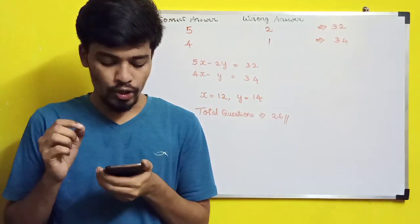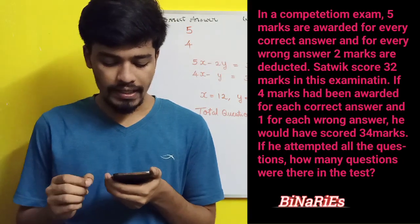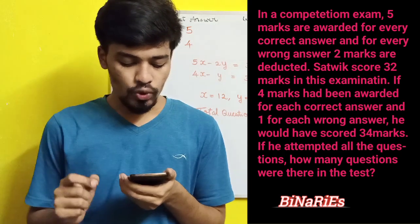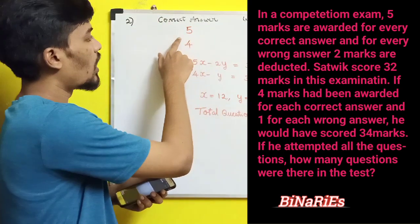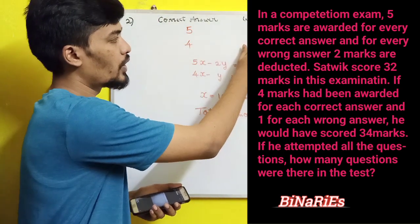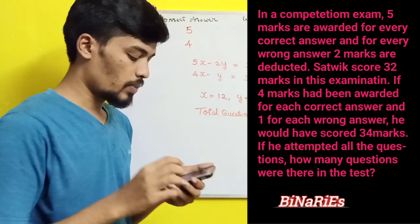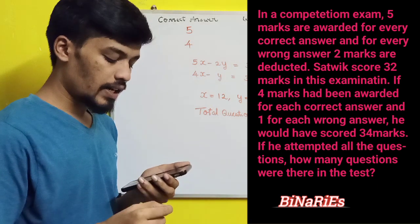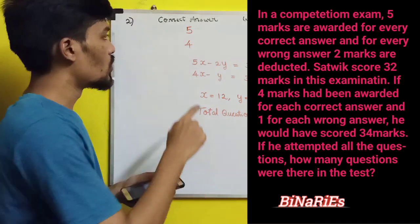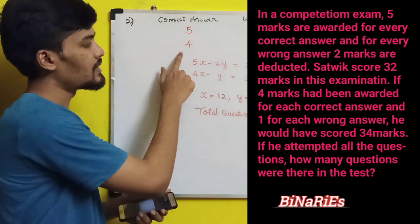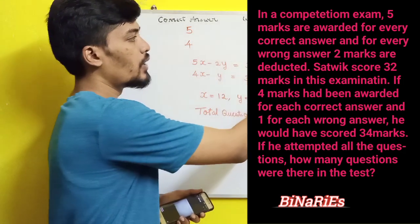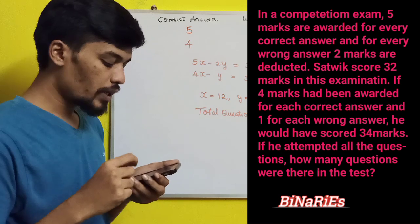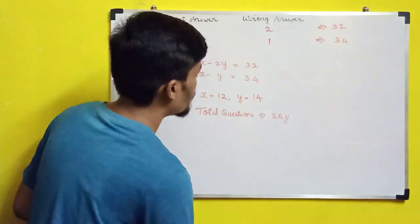The second question: in a competitive exam, five marks are awarded for every correct answer and two marks are deducted for every wrong answer. Sattvic scored 32 marks. If four marks had been awarded for each correct answer and one mark deducted for each incorrect answer, he would have scored 34 marks. If Sattvic attempted all the questions, how many questions were there in the test?